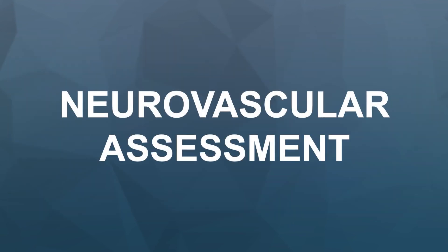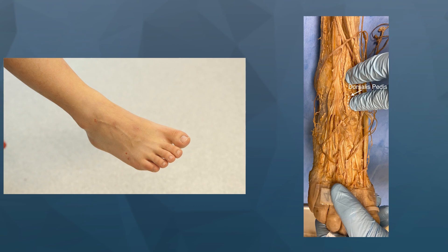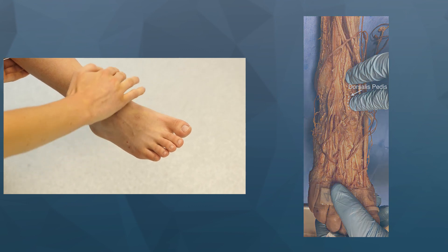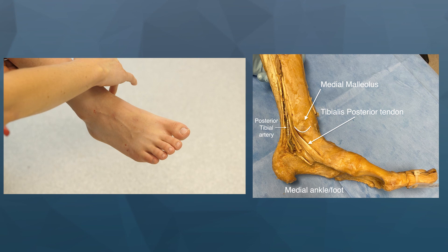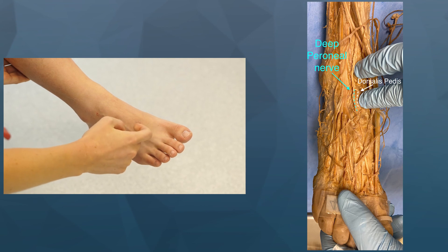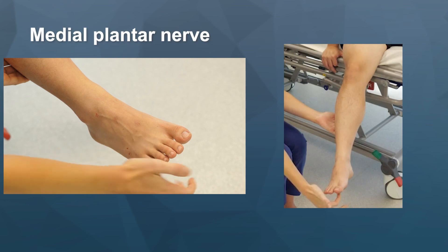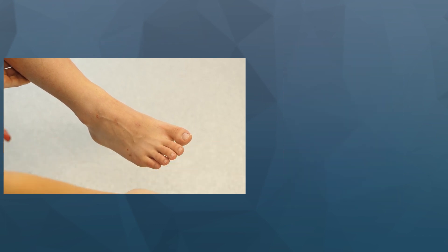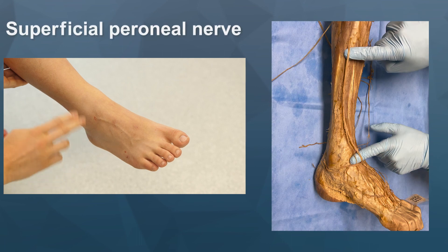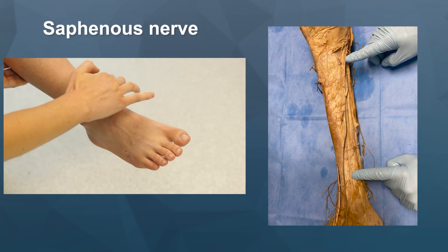Finally, remember to assess the patient's neurovascular status. This is particularly important in this examination as neuropathies are frequently seen in the foot and ankle and will influence their management pathway. First, assess the dorsalis pedis. Next, palpate the posterior tibial artery. Follow this with assessing the deep peroneal nerve sensation, then the medial plantar nerve sensation, then the sural nerve, and the superficial peroneal nerve, which can be tested over the proximal dorsum of the foot and the distal leg. Next, assess the saphenous nerve.